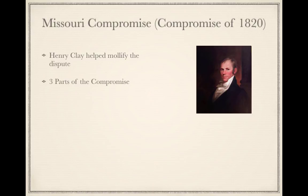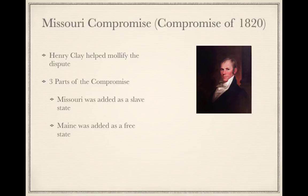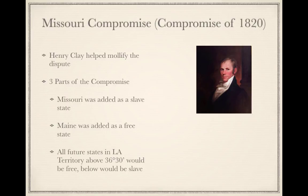Three parts of the Missouri Compromise we need to know: First, Missouri will be added to the Union as a slave state — and importantly, Missouri is above the 36°30' line, an important line marking the division between free and slave regions. Second, to keep the balance of power in the Senate, Maine will be added as a free state. Third, all future states in the Louisiana Territory above the 36°30' line would be free, and below would be slave. Missouri is above that line but is the exception to the rule.